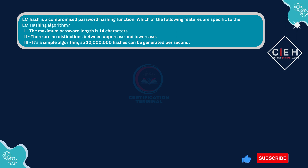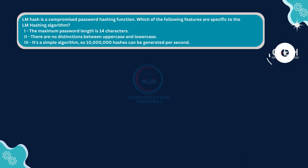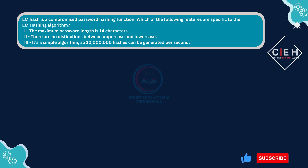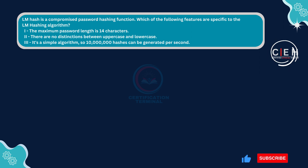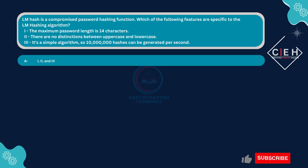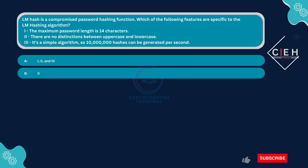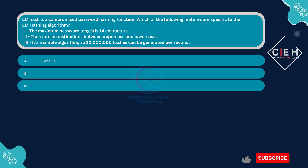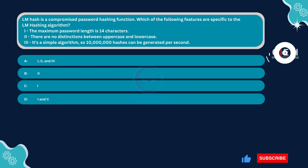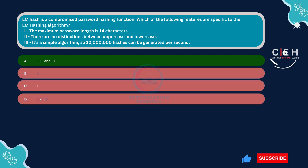Next question. LM hash is a compromised password hashing function. Which of the following features are specific to the LM hashing algorithm? 1. The maximum password length is 14 characters. 2. There are no distinctions between uppercase and lowercase. 3. It's a simple algorithm, so 10 million hashes can be generated per second. Option A: 1, 2, and 3. Option B: 2. Option C: 1. Option D: 1 and 2. The correct answer is Option A: 1, 2, and 3.